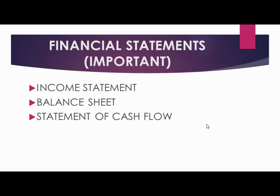In the third chapter we will talk about financial statements which are prepared — the income statement, balance sheet, and statement of cash flow. The income statement is also known as the profit and loss account, where we calculate income for a particular period. The balance sheet covers assets, liabilities, and equity.